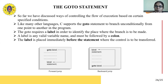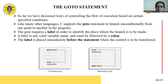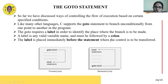The next topic is the goto statement. So far we have discussed different ways of controlling the flow of execution based on conditions. Like other programming languages, C also supports the goto statement to branch unconditionally from one point to another in the program. The goto statement requires a label to identify the place where the branch is to be made. A label is any valid variable name and must be followed by a colon, placed immediately before the statement where control is to be transferred.